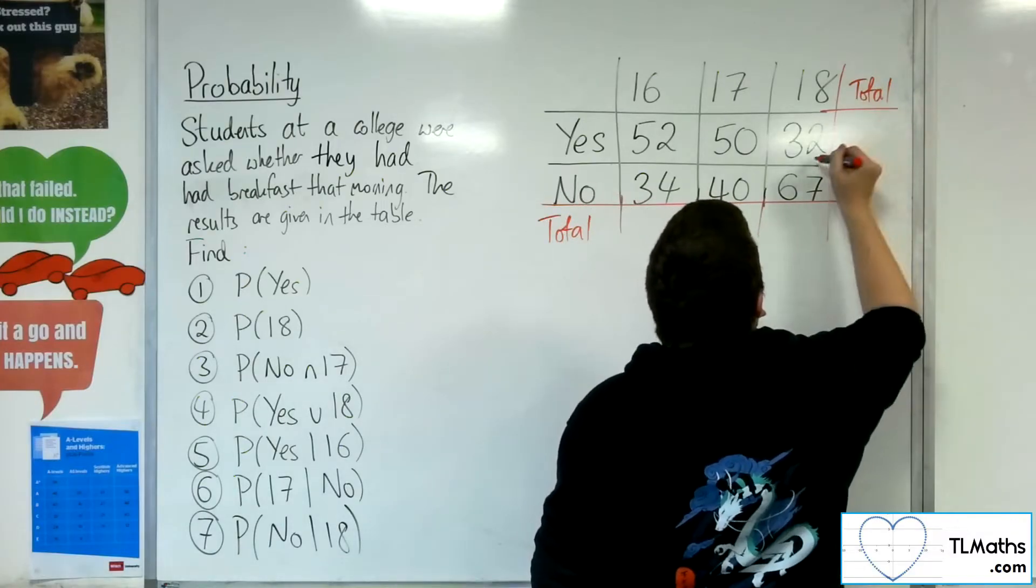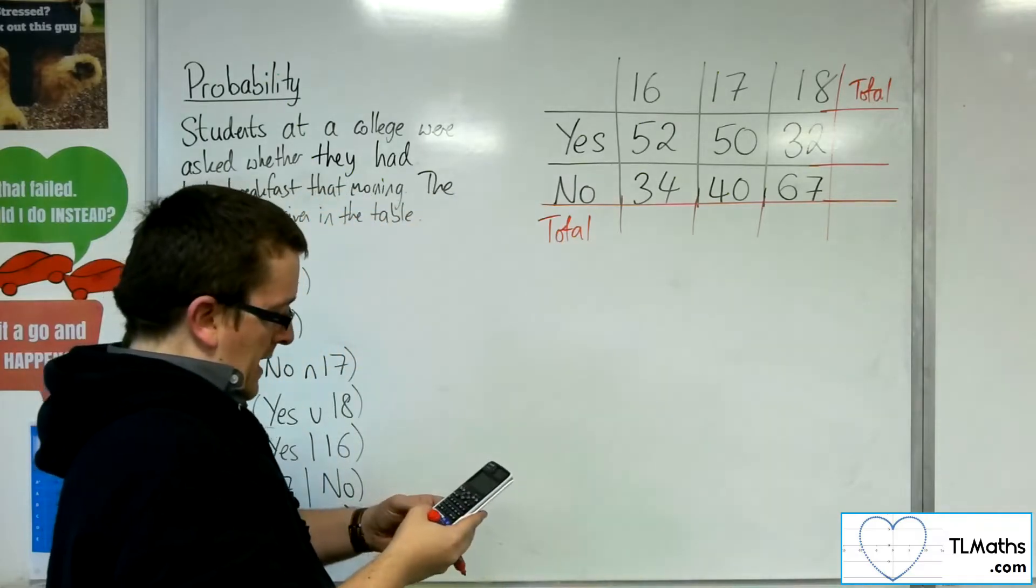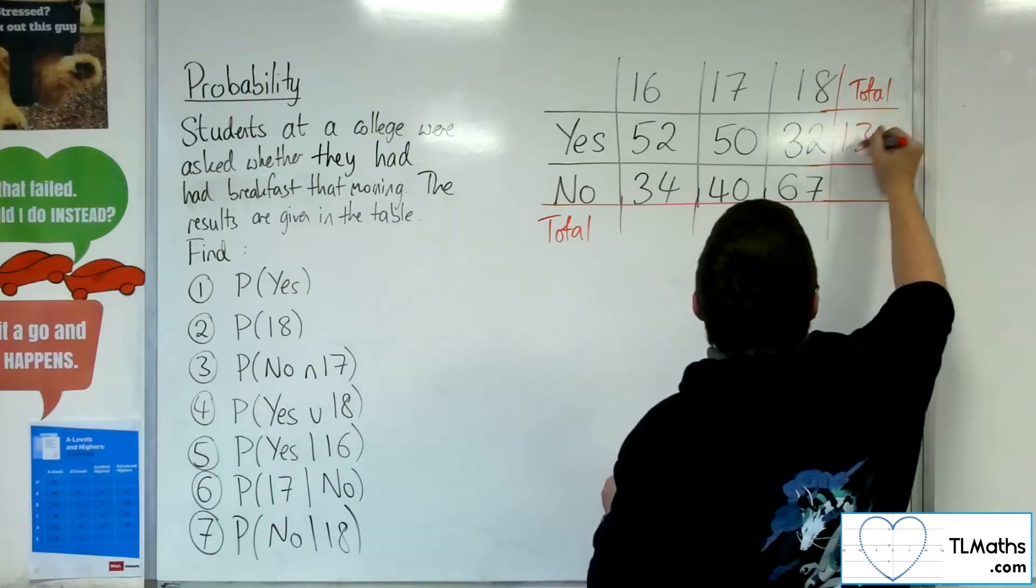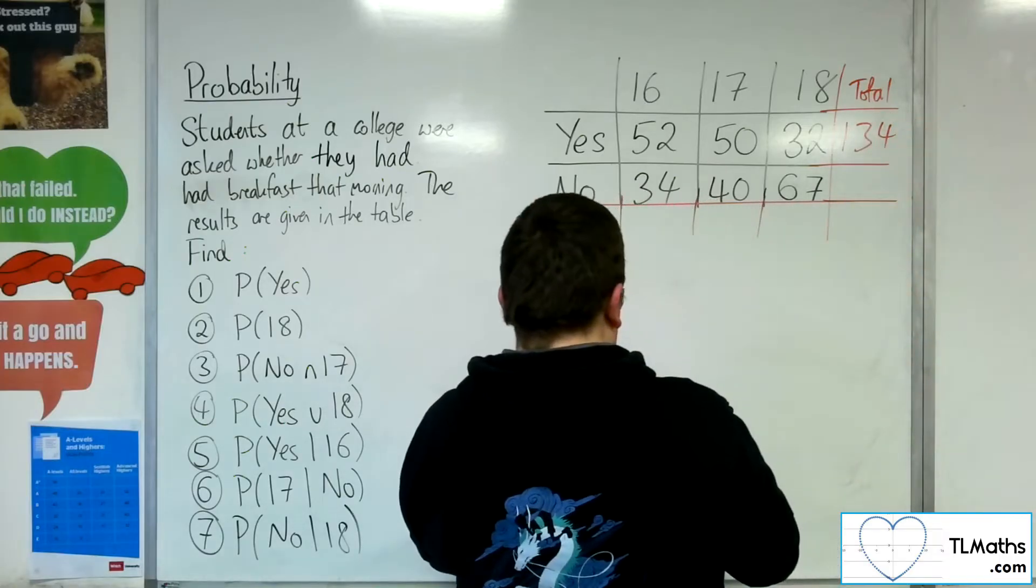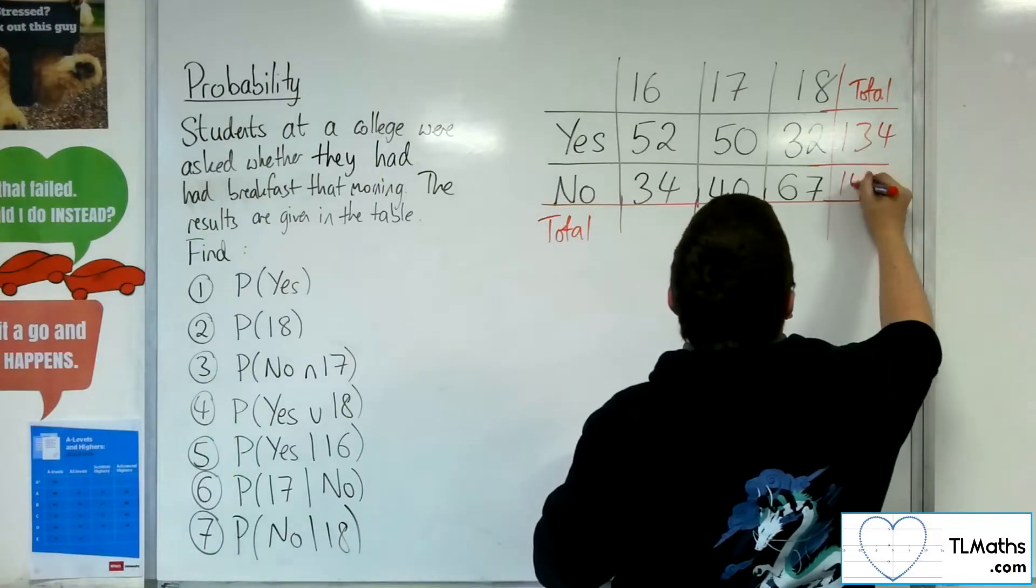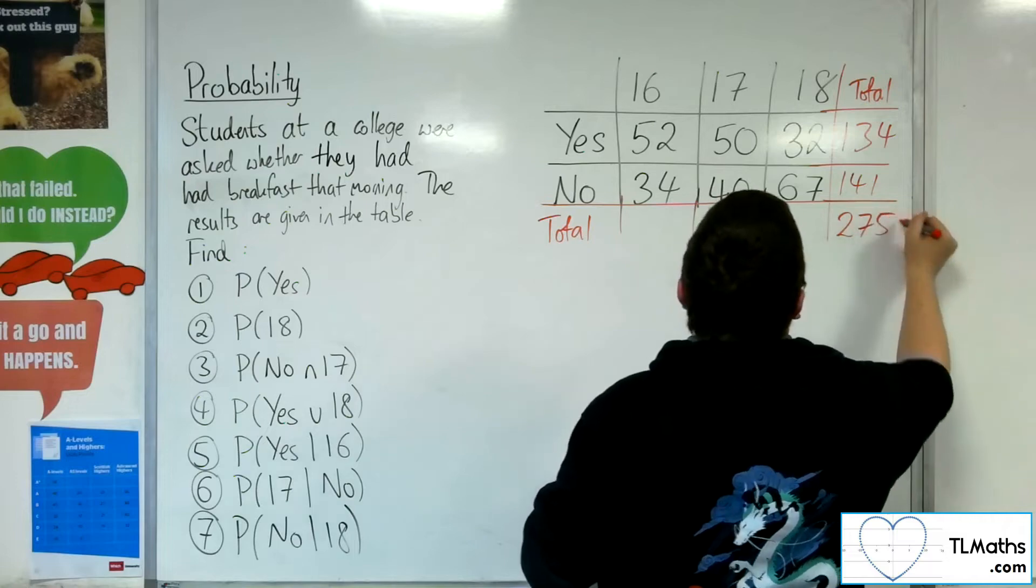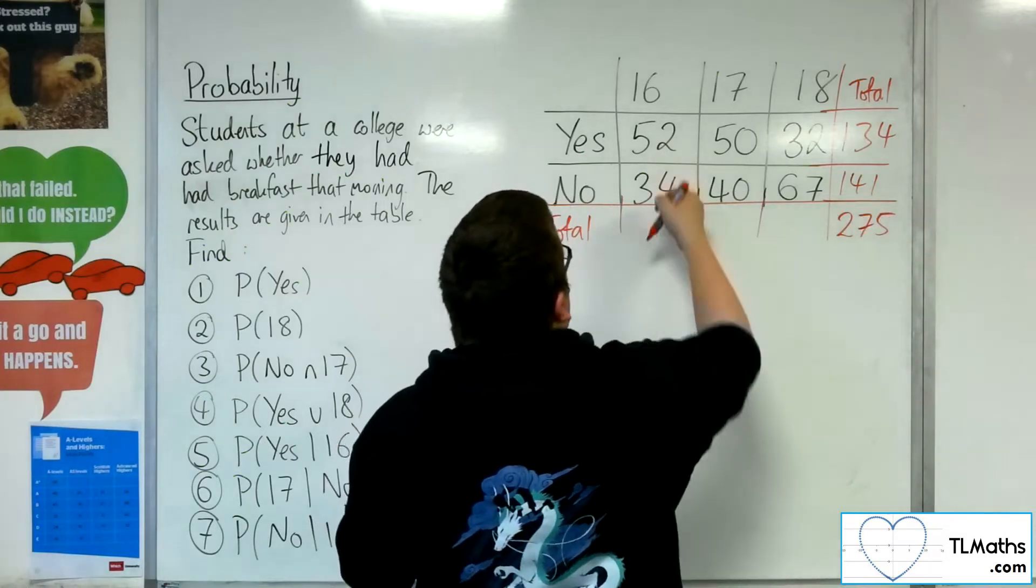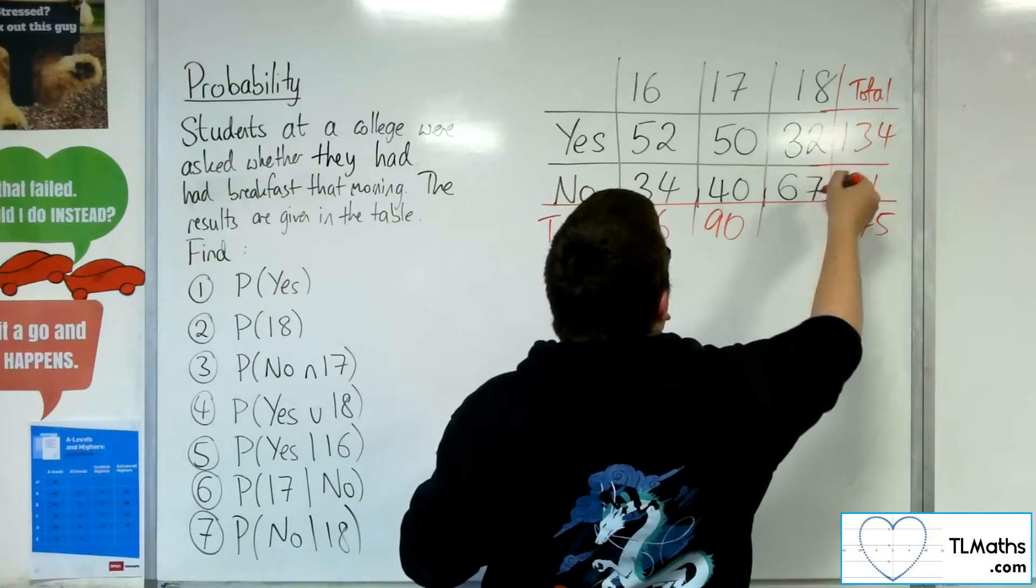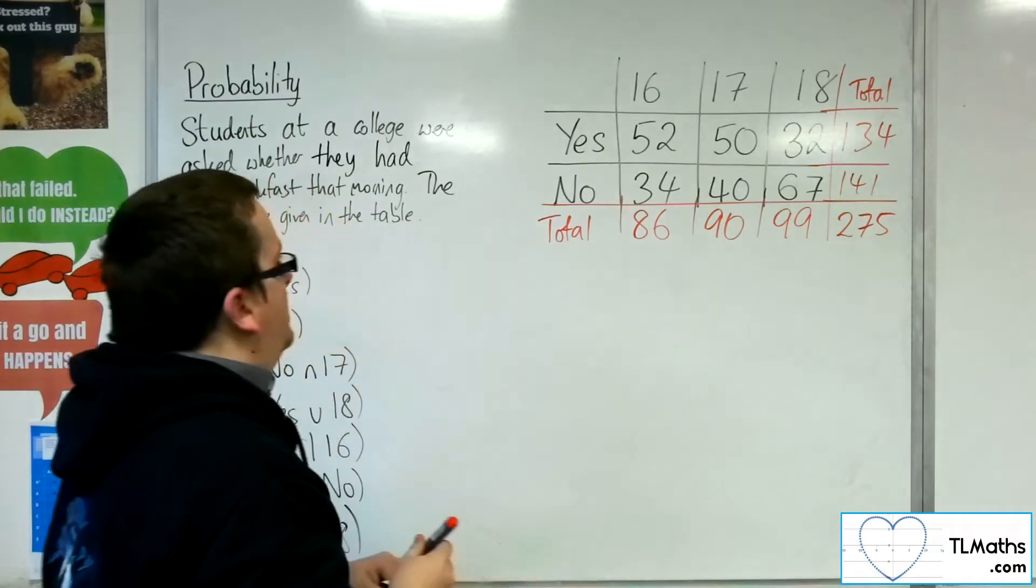Okay. Right. So 52 plus 50 plus 32, that's 134. And we've got 34 plus 40 plus 67, so 141. So that's a grand total of 275 students. So we'd have 86 there, 90 there, and 99 there. So those three should add up to 275 as well.